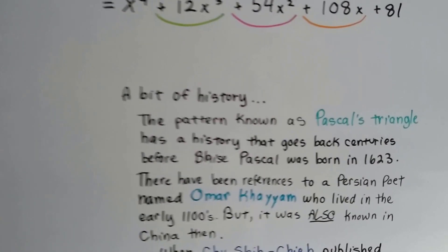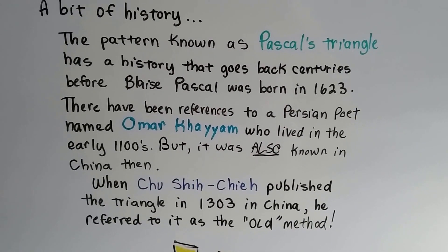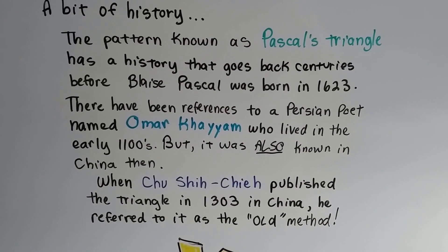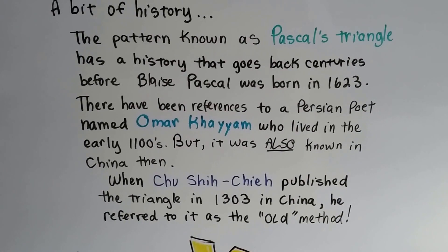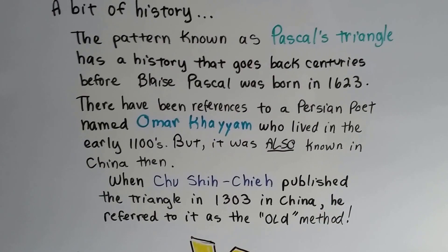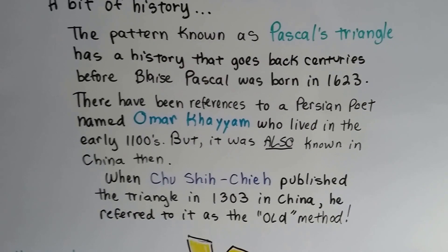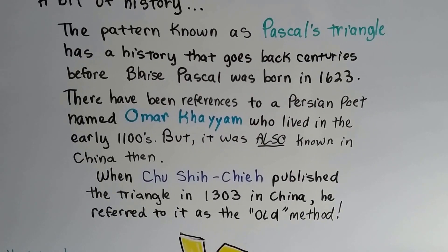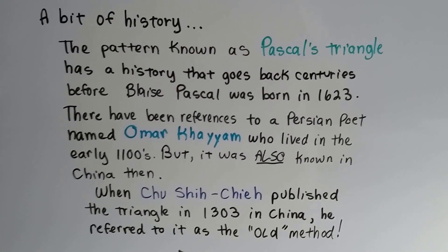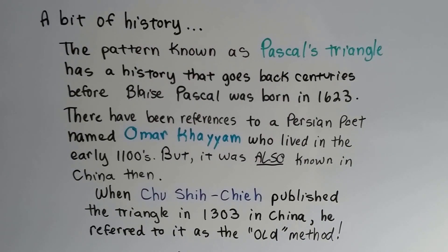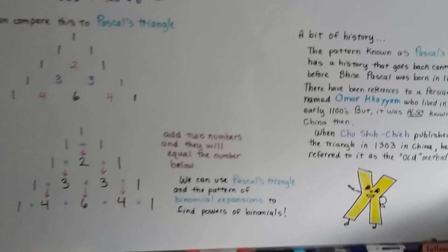Here's a little bit of history. This pattern known as Pascal's Triangle has a history that goes back centuries before Blaise Pascal was born in 1623. There have been references to a Persian poet named Omar Khayyam, who lived in the early 1100s — that's the 12th century. But it was also known in China. When Chu Shichie published the triangle in 1303 in China, he referred to it as the old method. So wow, this has been around for a long time. People have been playing with numbers and patterns and puzzles.